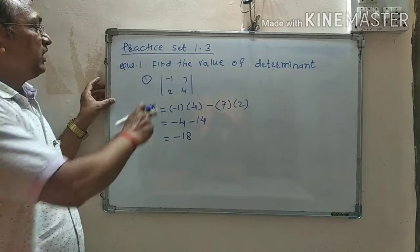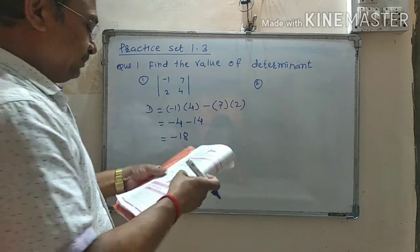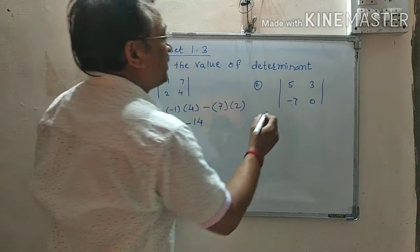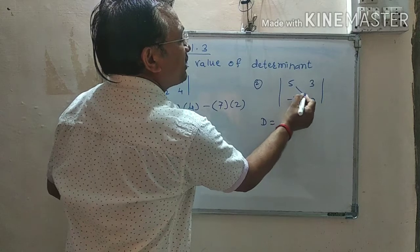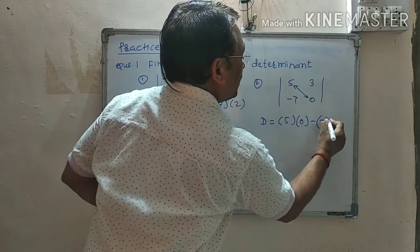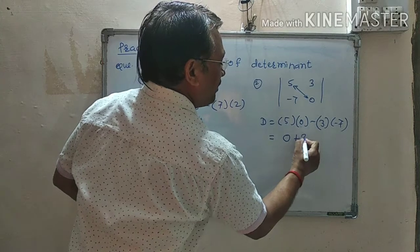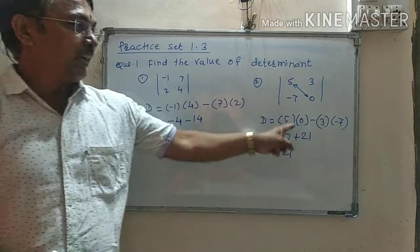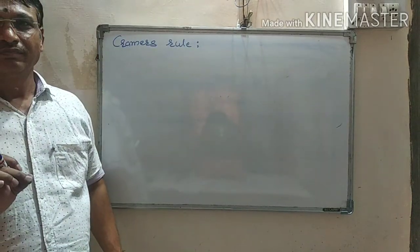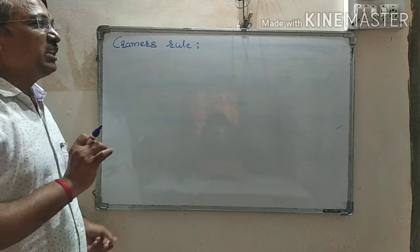This is the value of this determinant. One more example: 5, 3, minus 7, 0. D is equal to, cross multiplication: 5 into 0 minus 3 into minus 7. It is equal to 5 into 0 is 0, minus minus becomes plus, 3 times 7 is 21, and the value is 21. In this way we calculate determinant's value. Next method: Cramer's Rule.